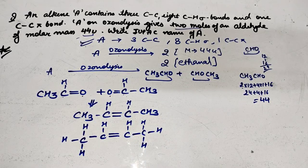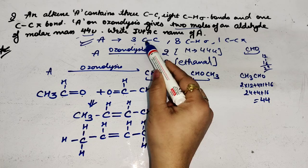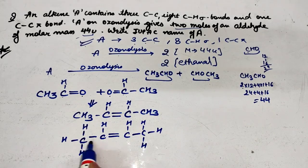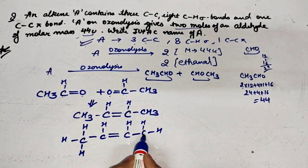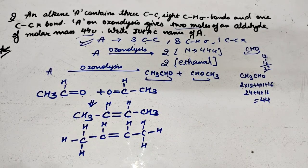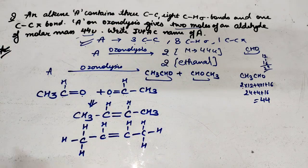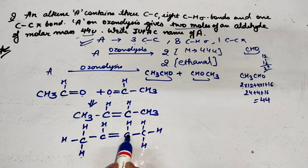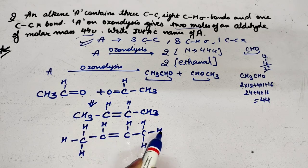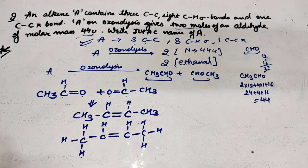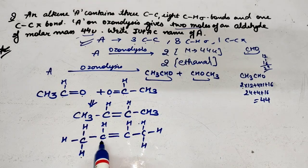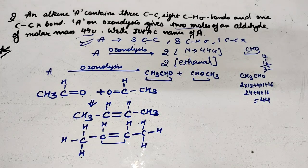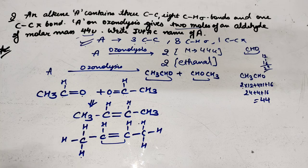Now let's check A. They said A contains 3 C-C bonds - let's check: 1 C-C bond, 2, 3. This is correct. Next they said 8 C-H sigma bonds: 1, 2, 3, 4, 5, 6, 7, 8. This is also correct. Then they said 1 C-C pi bond. This is the C-C pi bond. Pi bond means there's a double bond - when there are 2 bonds, one is sigma and one is pi.